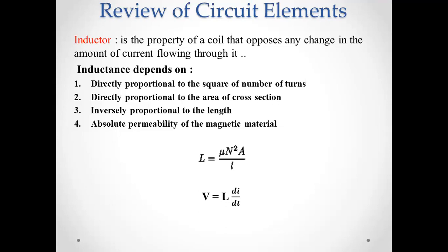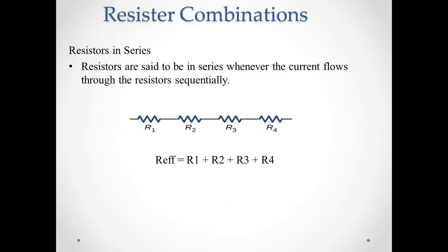The voltage-current-inductance relation is V equals L into di by dt. So circuits generally depend on resistance, capacitance, and inductance. The combination of resistance is connected in two types: series connection and parallel connection.